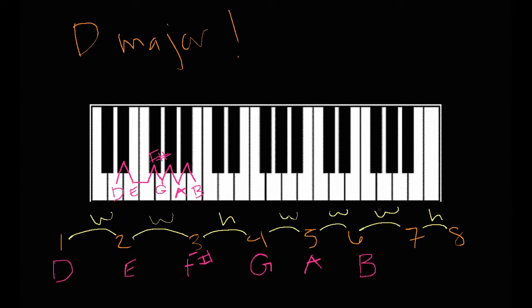Then we'll go from B a whole step up: B to C to C sharp. So C sharp is the seventh note, or the major seventh note. And then finally, to get back to the tonic, to get back to D — the octave — we just go a half step up from C sharp back to D. So those are all the notes in the D major scale: D, E, F sharp, G, A, B, C sharp, and then D.